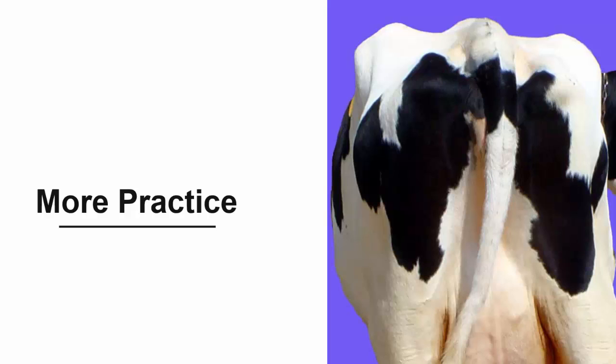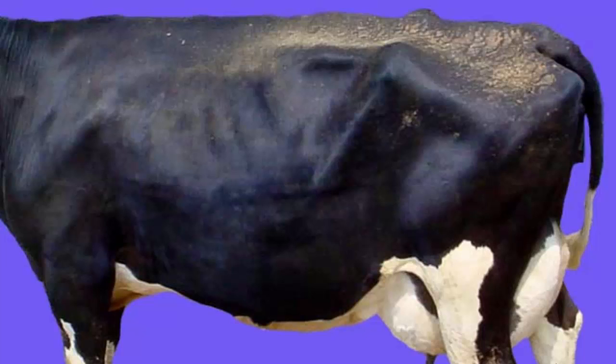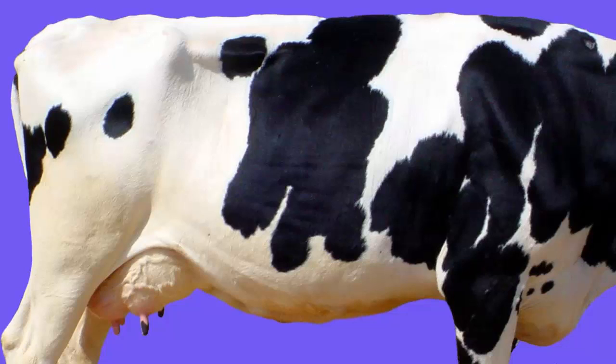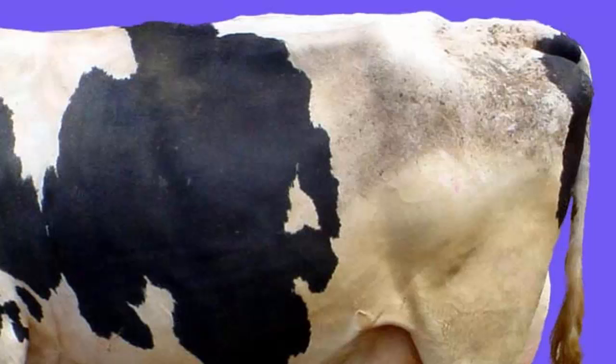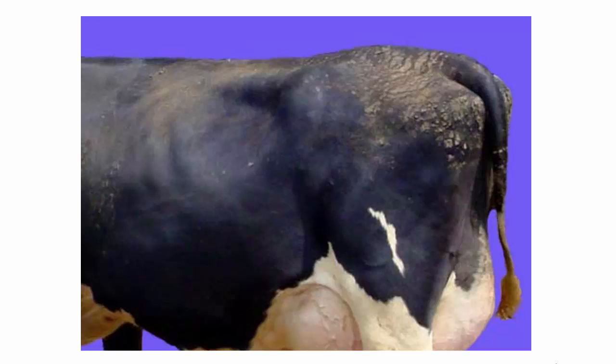Since this first decision can be a little difficult, here are a few more examples. I will show the cow, pause to give you time to decide, and then trace the angle and provide the answer for each example. This cow has a little more condition and a U angle. That's right, a V. Again, a V. The angle here is a U. How about one more? Again, a U.